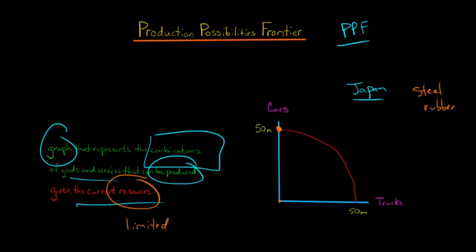For example, let's say they were going to produce 40 million cars — that brings us to a specific point on the curve. And let's say that also corresponds to 40 million trucks. So this combination would correspond to 40 million cars and 40 million trucks. So they could have 50 million cars and zero trucks — that's point A — or another combination: 40 million cars and 40 million trucks — point B.